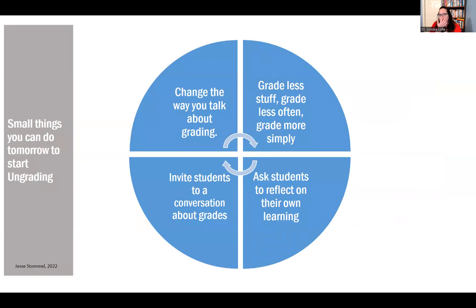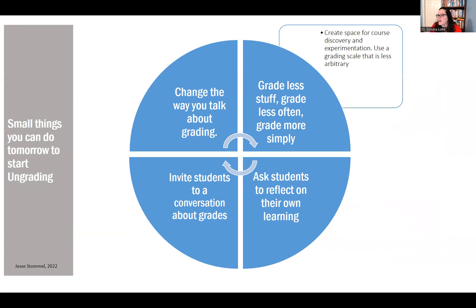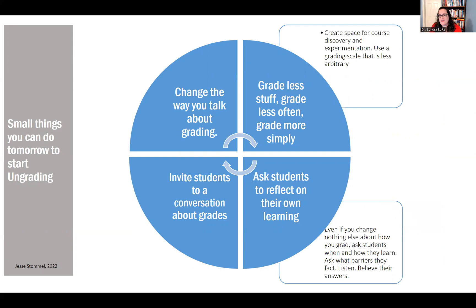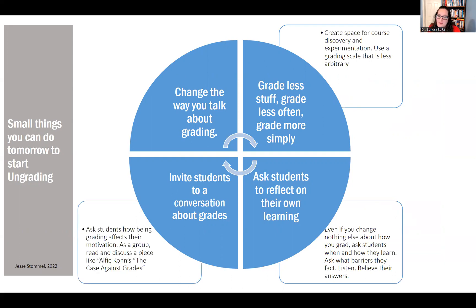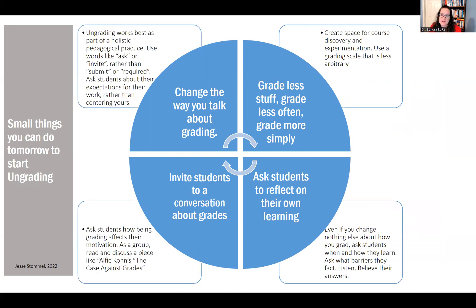I picked one example from Ungrading — professor Jesse Stommel — who has a great illustration about small things you can do to start ungrading: change the way you talk about grading, grade less stuff less often, grade more simply, invite students to conversations about grades, and ask students to reflect on their own learning. There are a few more pieces added to this that you can explore in the attached PDF or pause the video here to read.